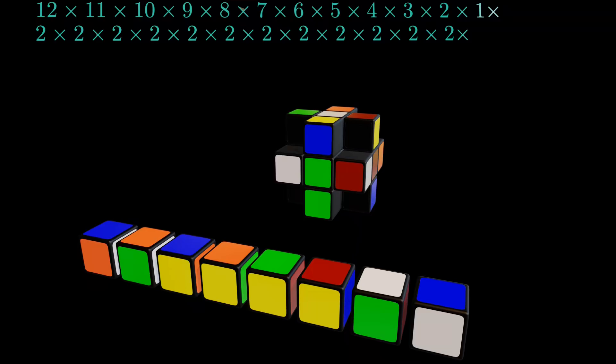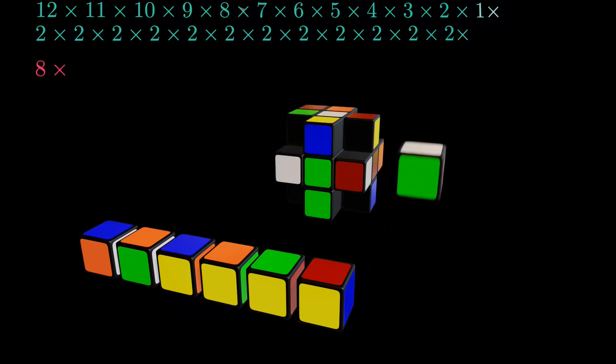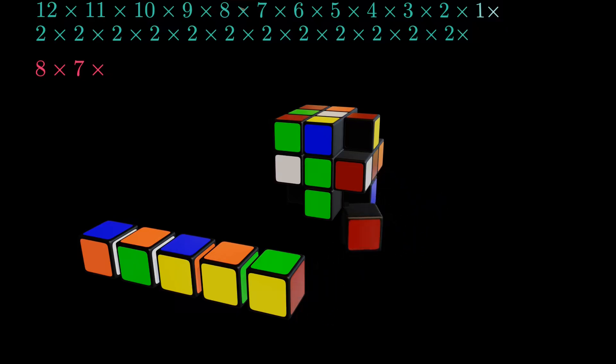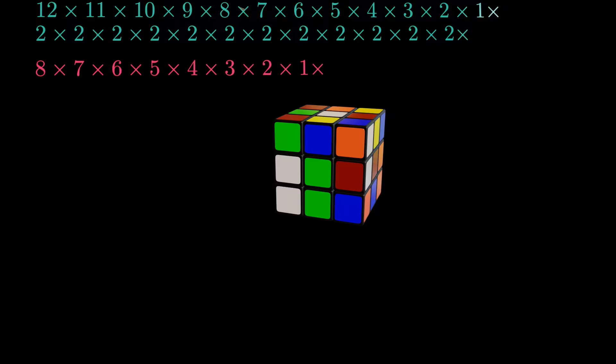Now let's count the corner pieces and luckily the procedure is quite similar. The first corner can go into any of the 8 available positions. Once it is placed, the second corner has 7 remaining spots. The third corner has 6 choices and this pattern continues. By the time we reach the 7th corner, there are only two possible locations left. Finally the last corner has no choice. It must go into the remaining empty spot. And since the counting of the corner pieces can be independently performed for any of the already existing configurations, we increase the number of configurations again by a factor of roughly 40,000.